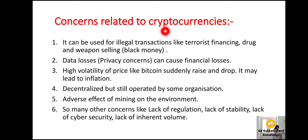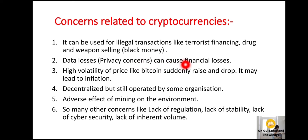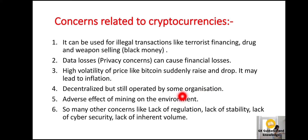What are the concerns related to cryptocurrencies? It can be used for illegal transactions like terrorist financing, drug and weapon selling, and black money. Data losses and privacy concerns can cause financial losses. Volatility of price — like Bitcoin suddenly raising and dropping — may lead to inflation. Also, it is decentralized but still operated by some organizations.